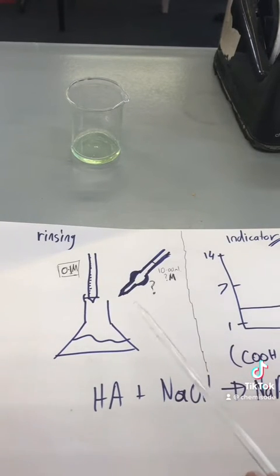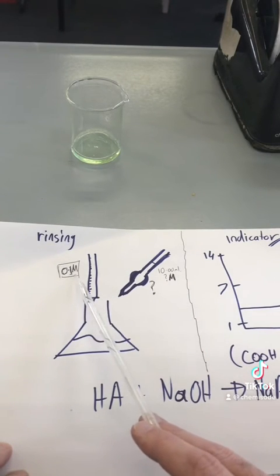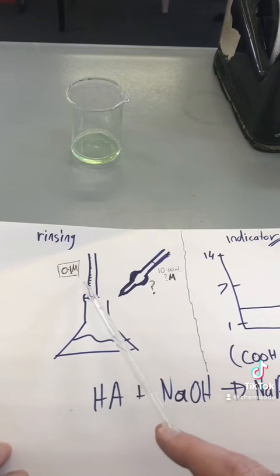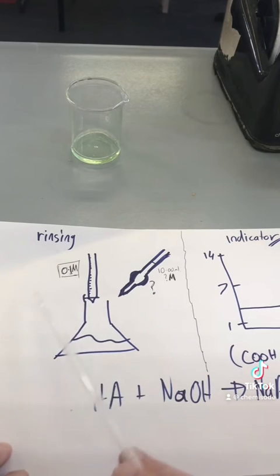With rinsing errors you need to follow it through, and you need to follow it through really slowly. Draw a little diagram and say what would happen if I rinsed this with water instead of my 0.1 molar. Again, that decreases in concentration, so I need to increase the amount I use. So therefore it looks like I have more over here.